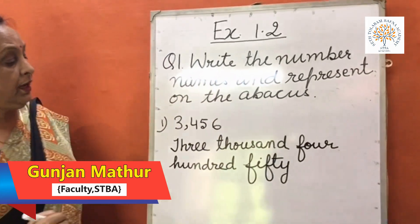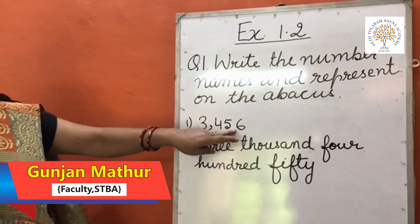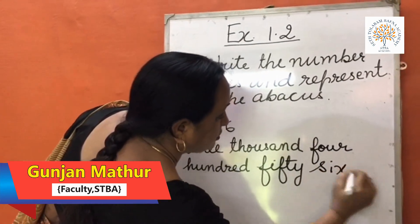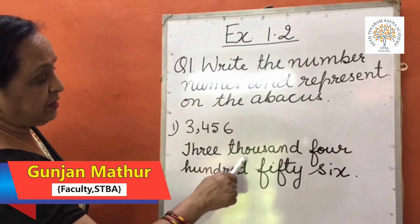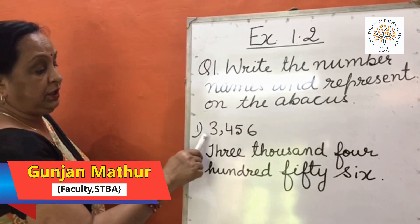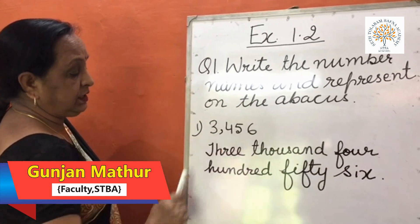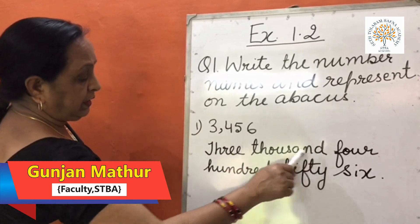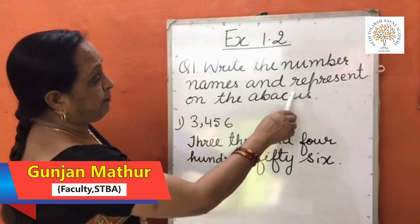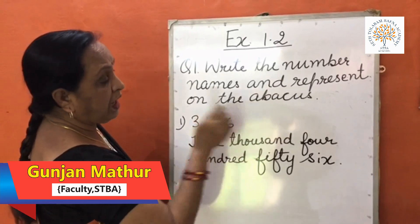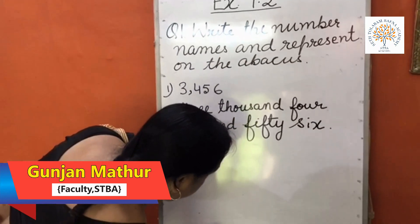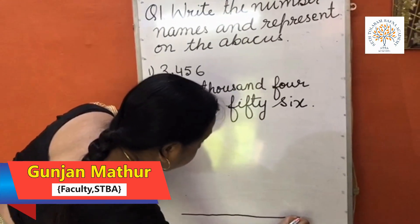The digit 6 is at the 1s place, so we write here 6. This number becomes 3456. The number name for 3456 is three thousand four hundred and fifty-six. The next part of this question is to represent this number on the abacus. First of all, we draw the abacus, as we already read about the abacus in our previous class.